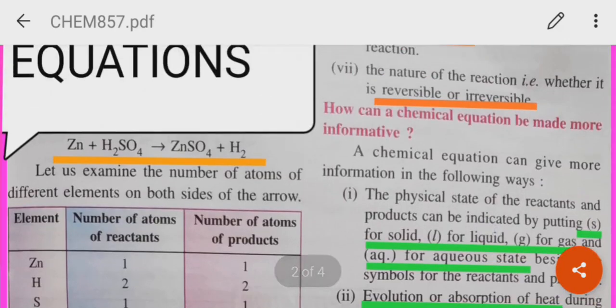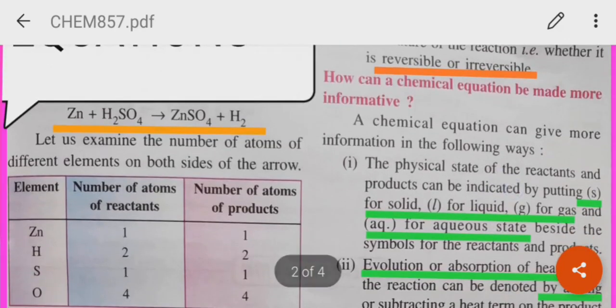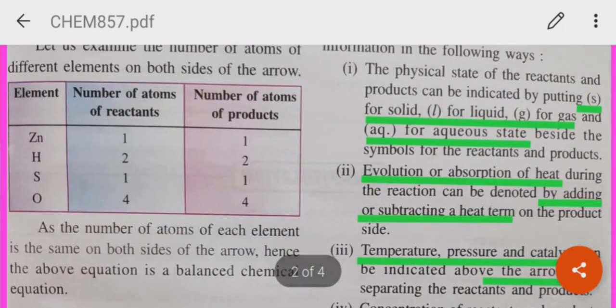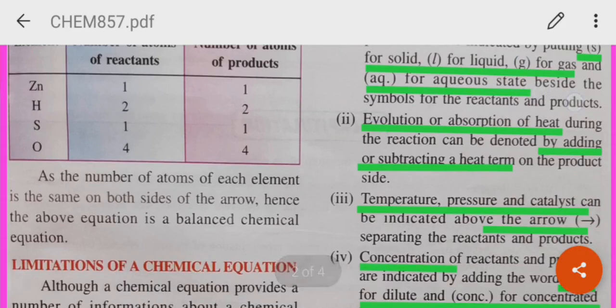Now, how can a balanced chemical equation be made more informative? The physical state of the reactants and the products can be indicated by putting S for solid, L for liquid, G for gas and AQ for aqueous state, beside the symbols for the reactants and products.